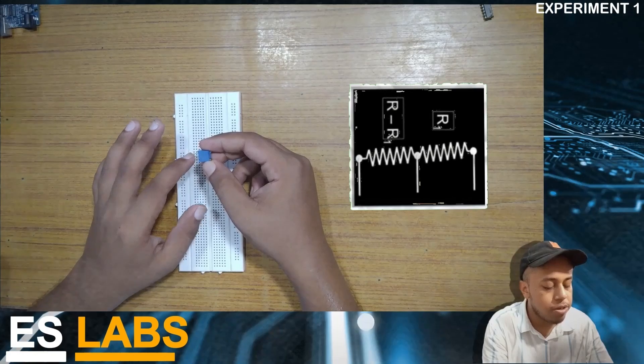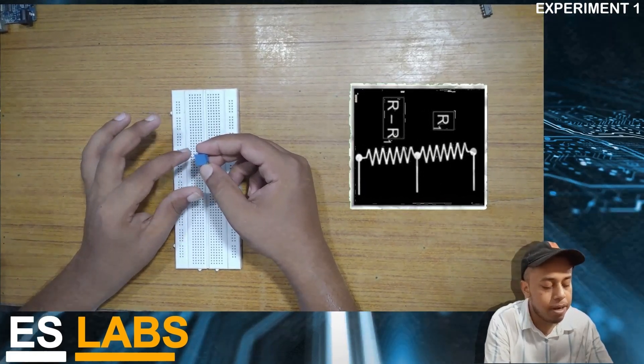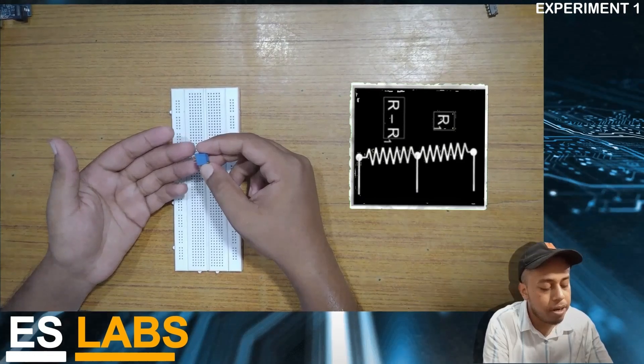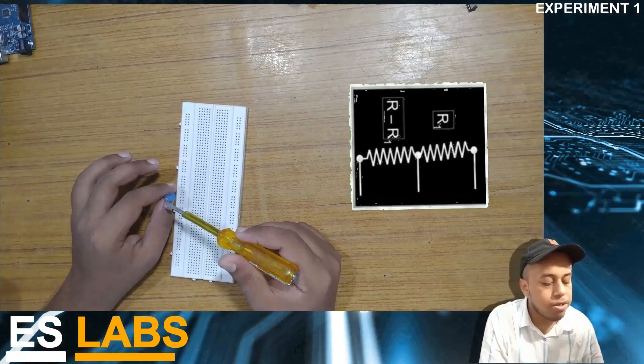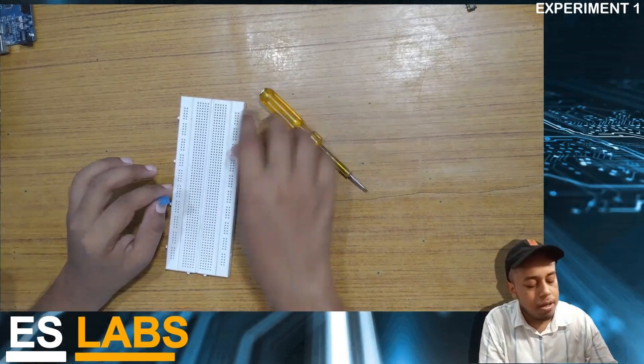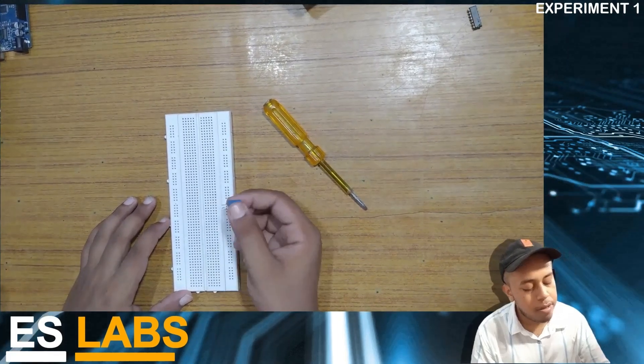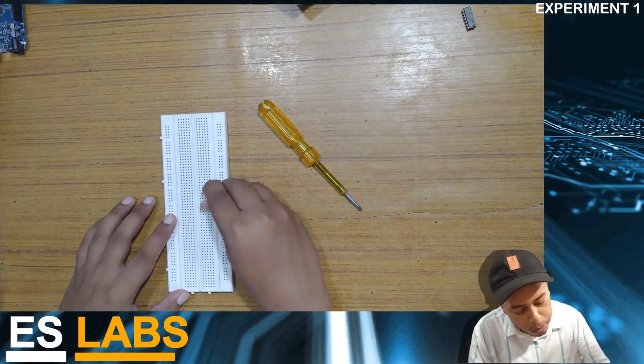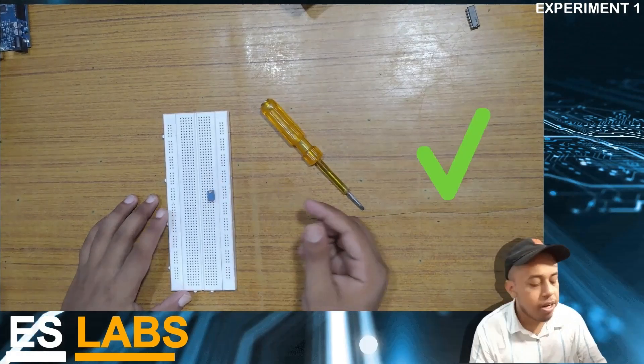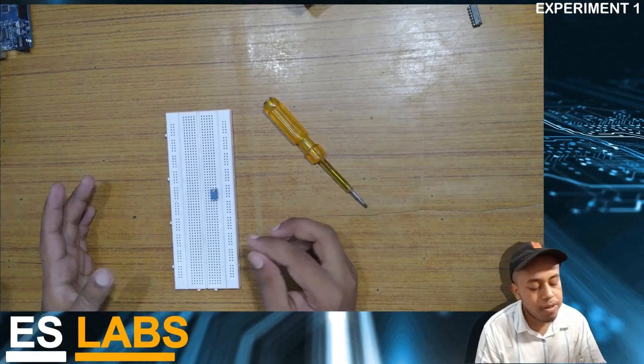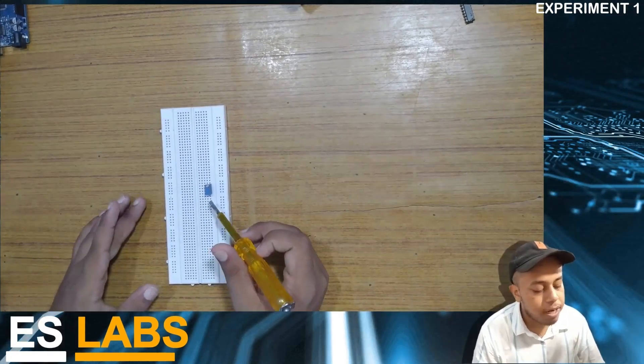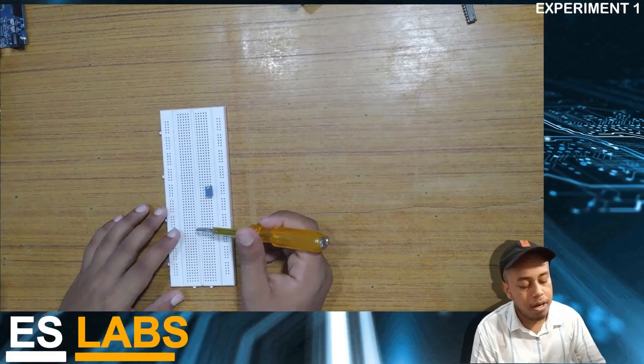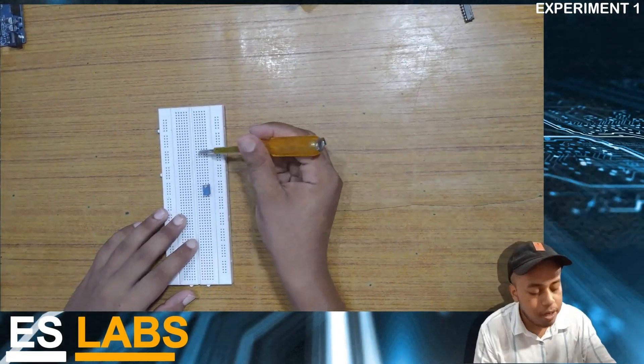The trim pot is a three terminal device which we use to get fixed resistance across the extreme terminals. But if we have to get variable resistance we can tap out the intermediate terminal with any of the extreme terminals to get our desired value. The value of R can be adjusted by using the screw here. But now the question is how we are going to connect our trim pot in this breadboard, vertically like this or horizontally. The horizontal way is incorrect because if we connect our trim pot in a horizontal manner then it will get shorted and we are not able to use it. So we connect it in a vertical manner.